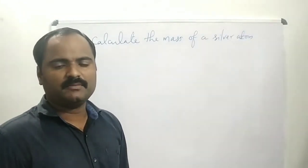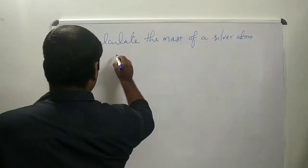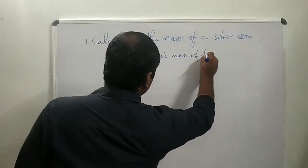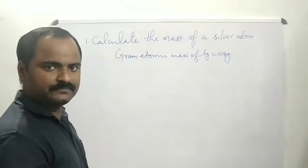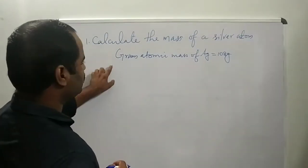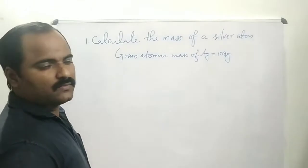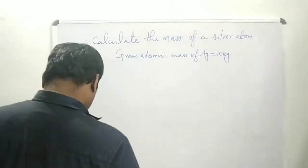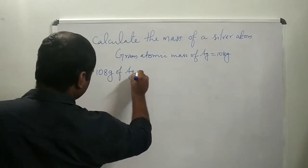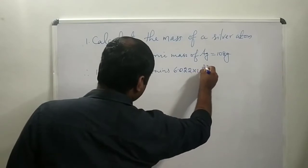To calculate the mass of one silver atom, we need the gram atomic mass of silver. The gram atomic mass of silver is 108 grams — that is the atomic mass of silver expressed in grams, known as gram atomic mass. So 108 grams is equal to one mole of silver atoms, and one mole of silver contains Avogadro's number of particles.